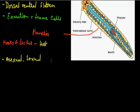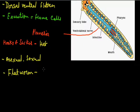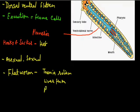These animals can perform both sexual and asexual modes of reproduction. The common examples of flatworms are Taenia solium, liver fluke, and Planaria.